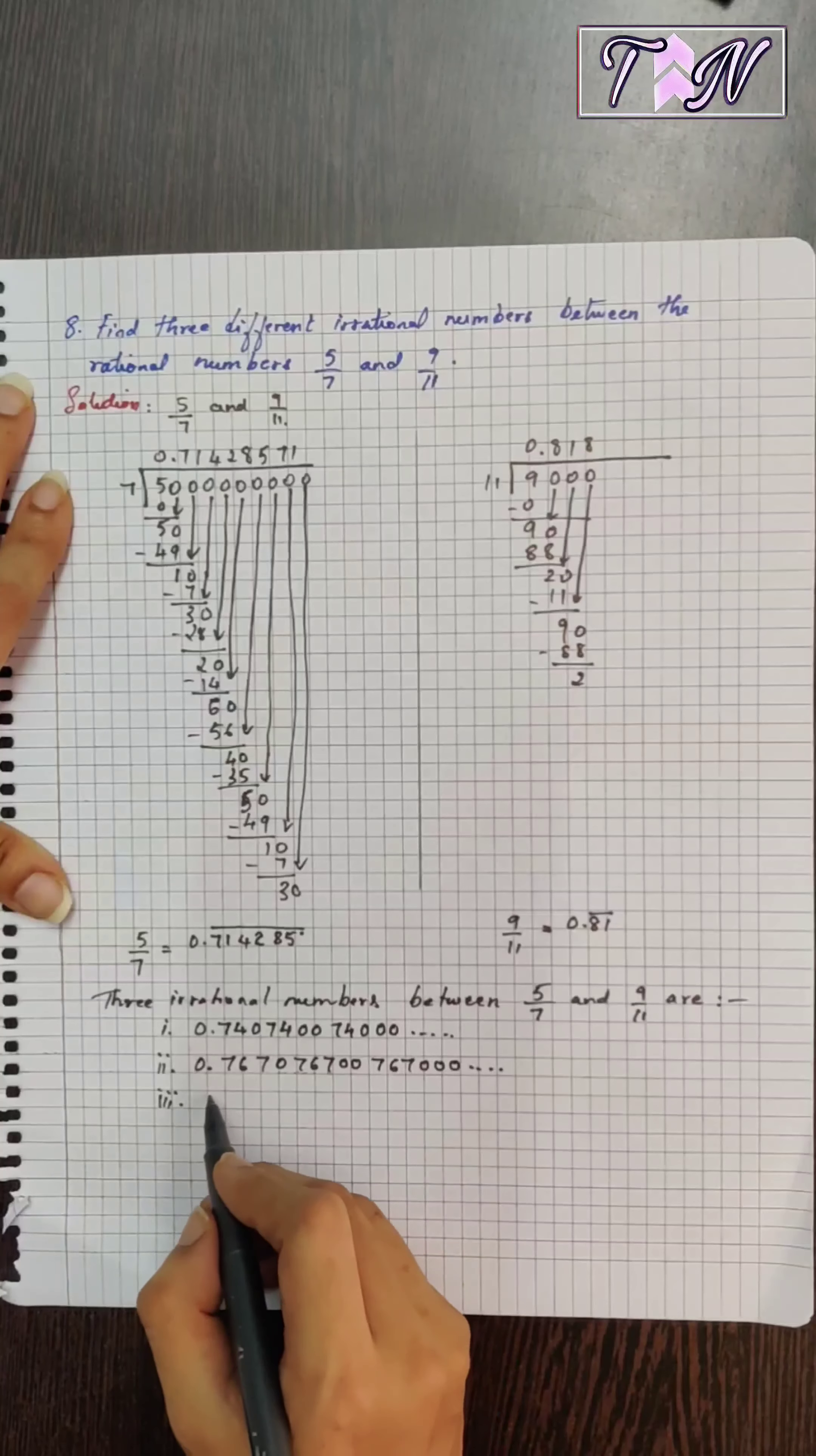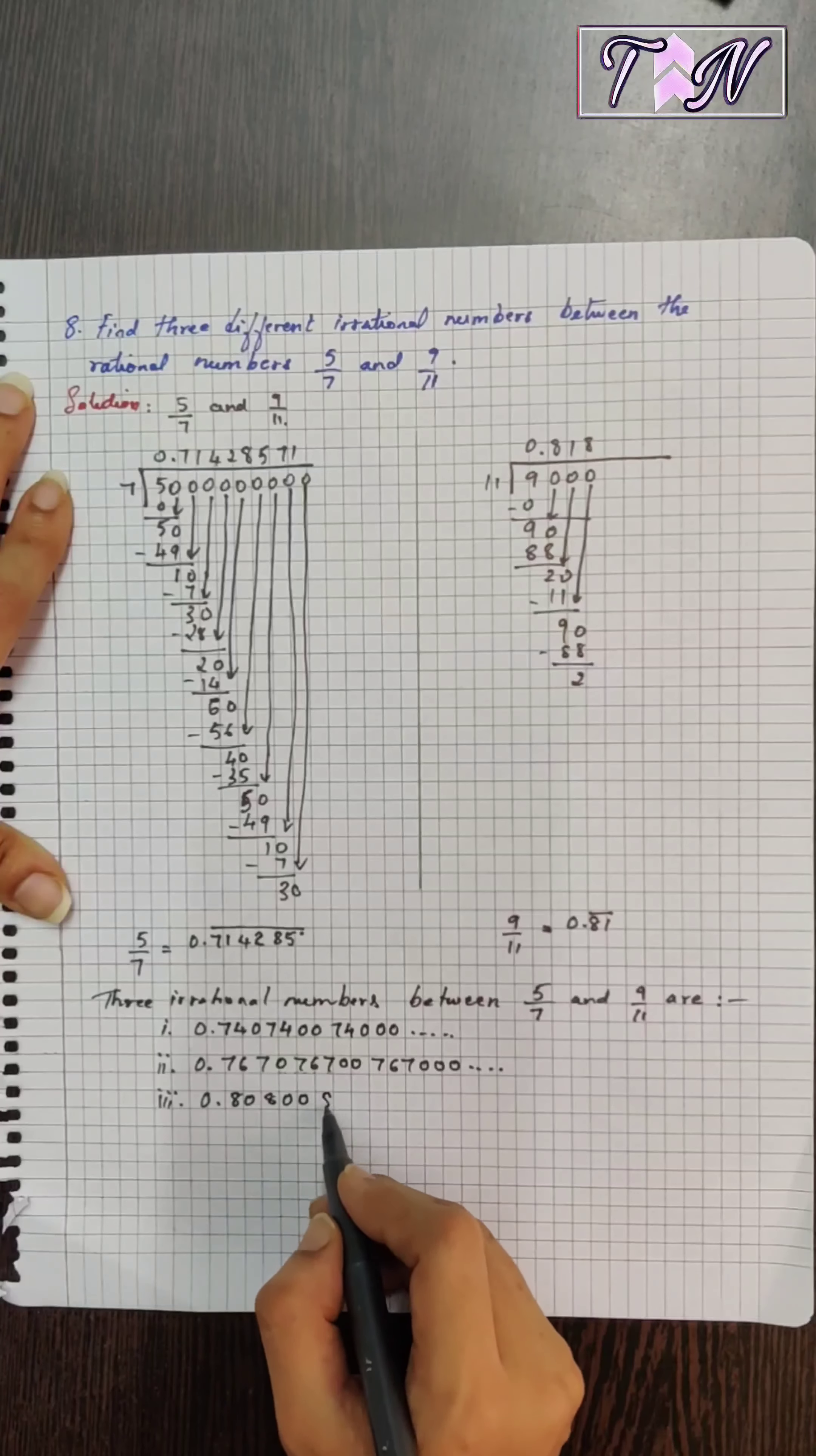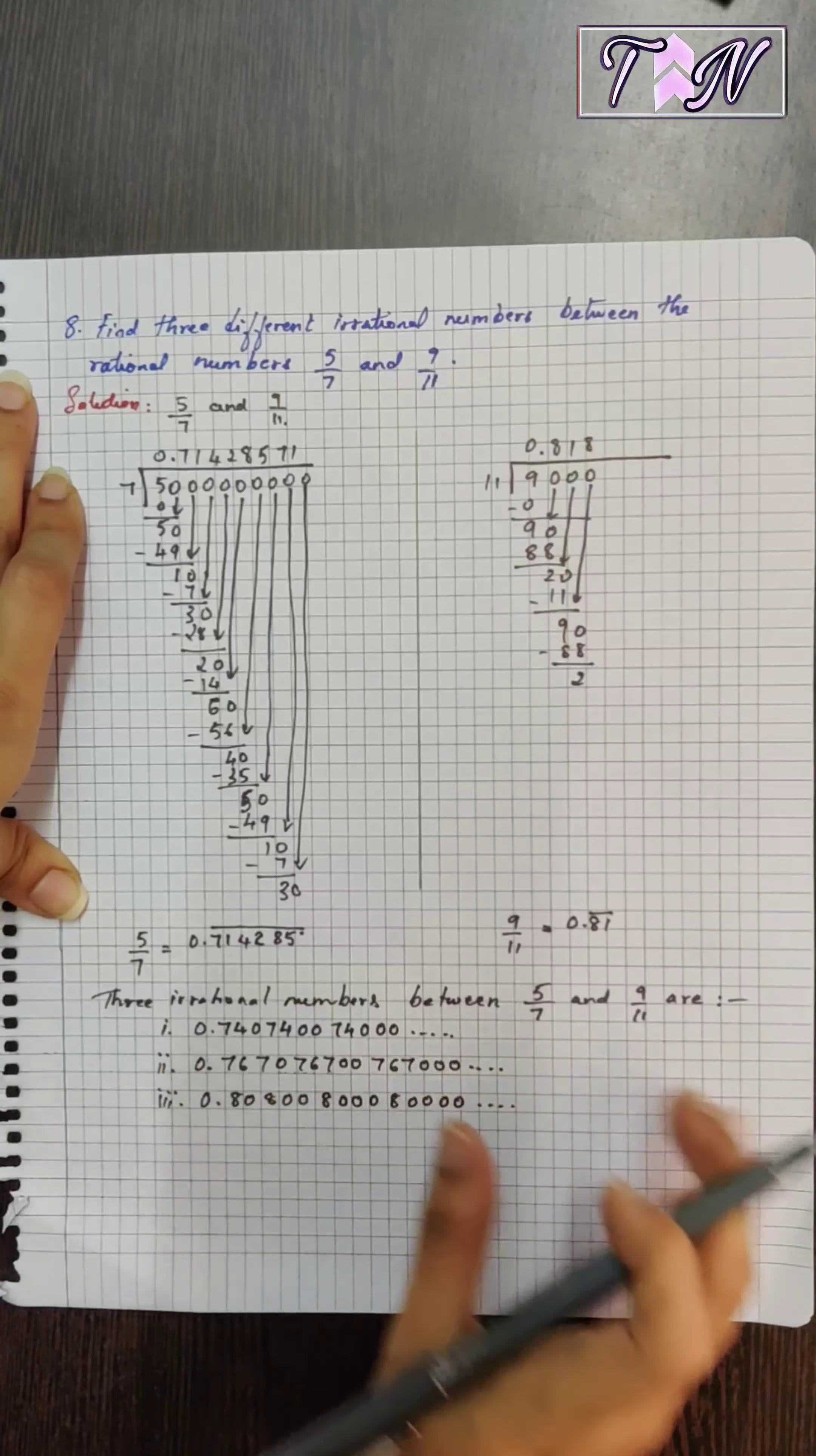And third one: 0.80. You can see it is still smaller than this and greater than this. 8, 0, 8, 0, 0, 0, 8, 0, 0, 0, 0, so on. So you can see the way I'm writing is the number of 0 goes on increasing. So the block never repeats.